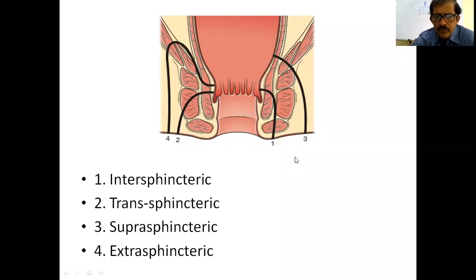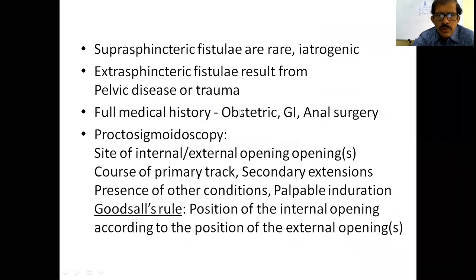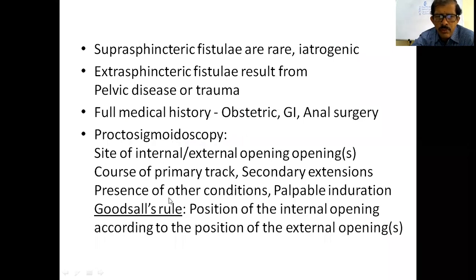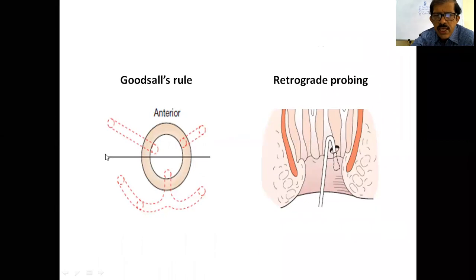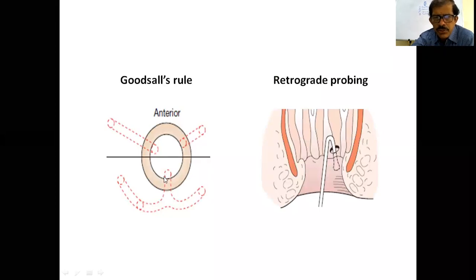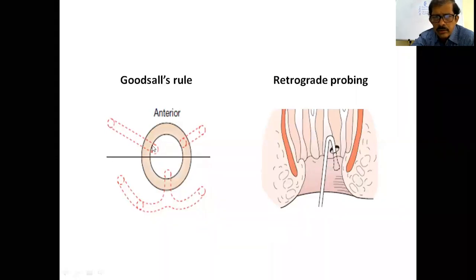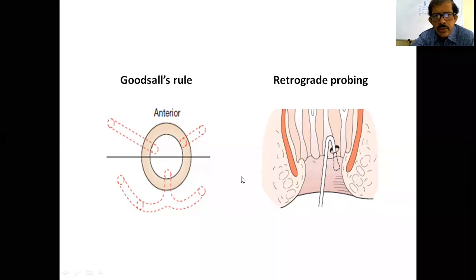Regarding Goodsall's rule: the position of the internal opening is predicted by the position of the external opening. If the external opening is anterior to the transverse line bisecting the anal canal into anterior and posterior halves, the fistula runs straight and opens directly into the anal canal. If the external opening is posterior to this line, the tract does not run straight — it curves to the midline and opens there.